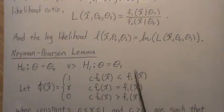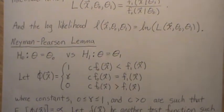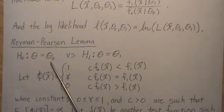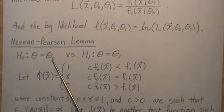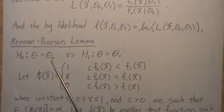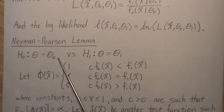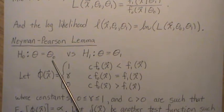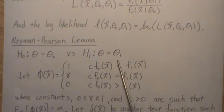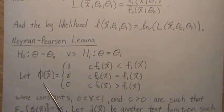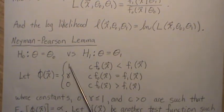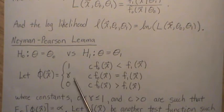Now to look at the Neyman-Pearson lemma, we're in a hypothesis testing setting and it's simple versus simple hypotheses. So the parameter space has two points, theta zero and theta one.